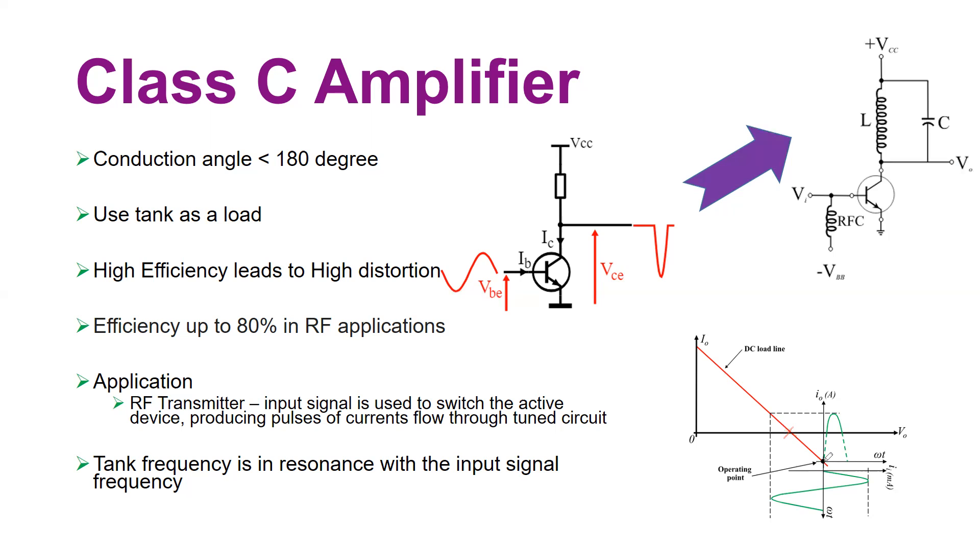You have this DC load line with a current intersection here and voltage intersection here. For a Class A amplifier your operating point is here, for a Class B amplifier your operating point is here, for Class AB amplifier your operating point is here, but for Class C your operating point is here.